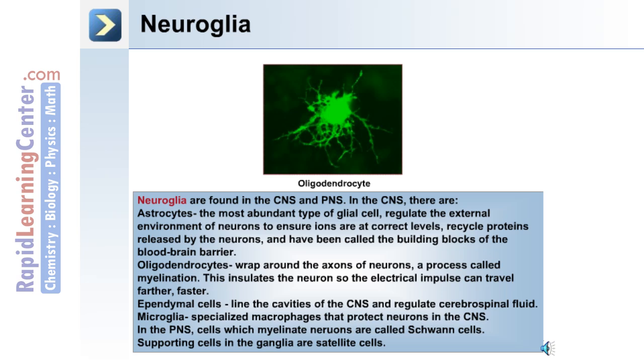In the peripheral nervous system, cells which myelinate neurons are called Schwann cells, and supporting cells in the ganglia are called satellite cells.